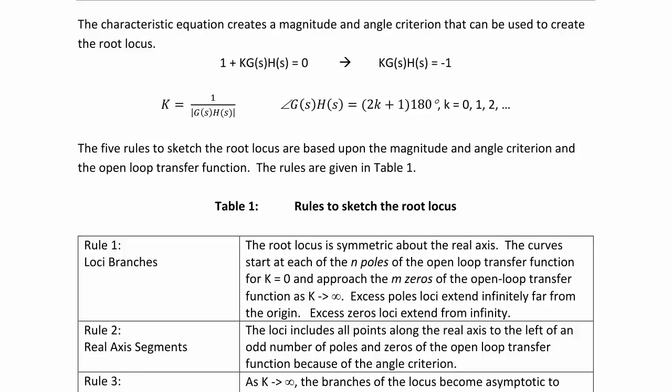Rule 2, Real Axis Segments: The loci includes all points along the real axis to the left of an odd number of poles and zeros of the open-loop transfer function because of the angle criterion.